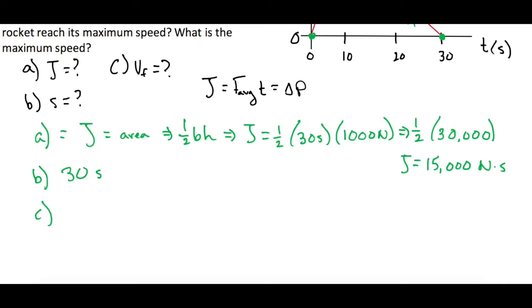For part C, what is the maximum speed? We're going to use our impulse-momentum relationship. J equals change in momentum. We already figured out J. We want the final velocity. Since P equals mass times velocity, we'll use delta P. So J equals P final minus P initial.